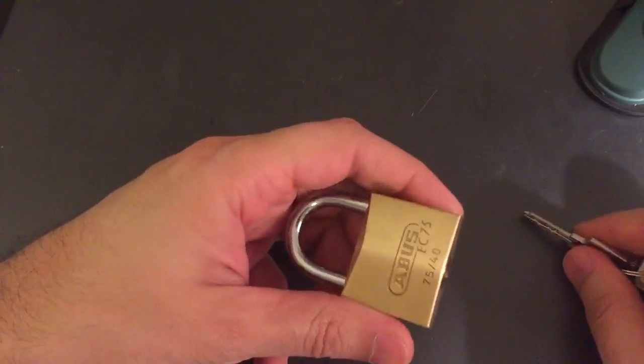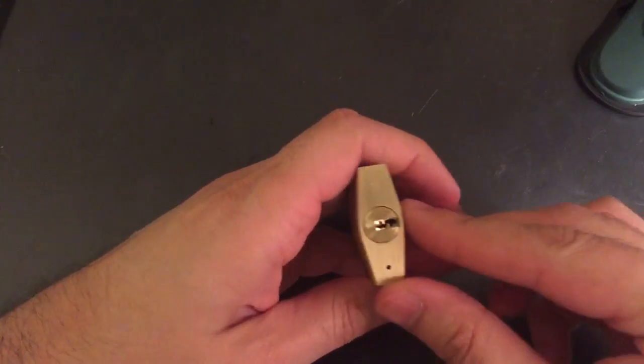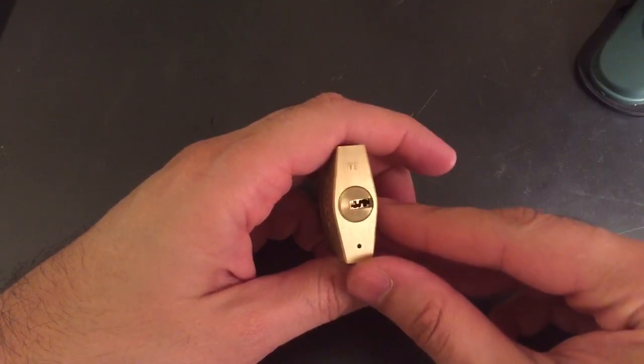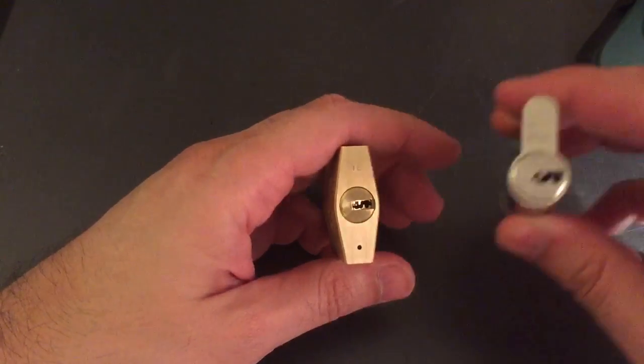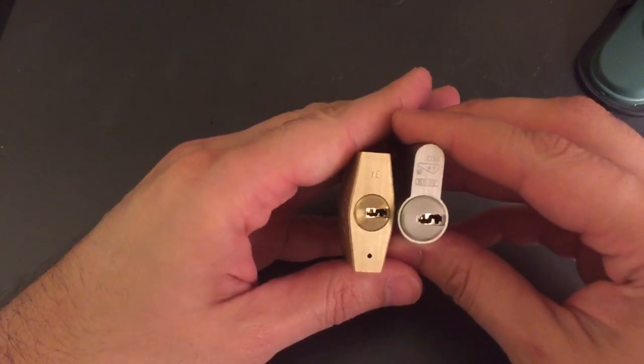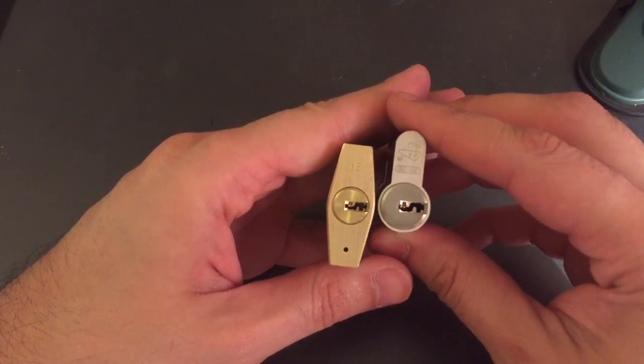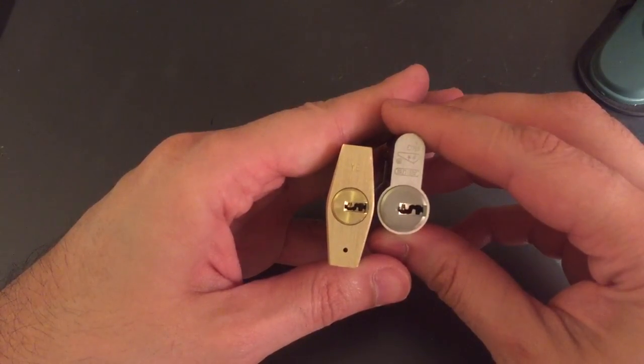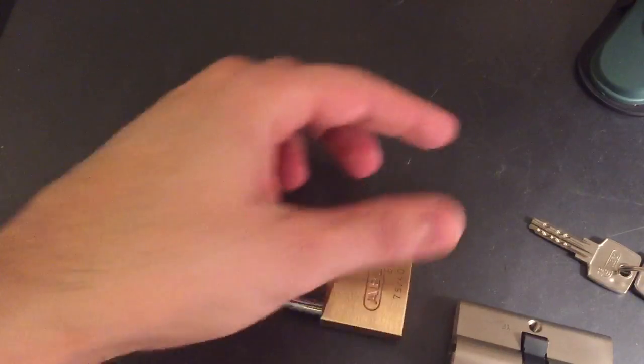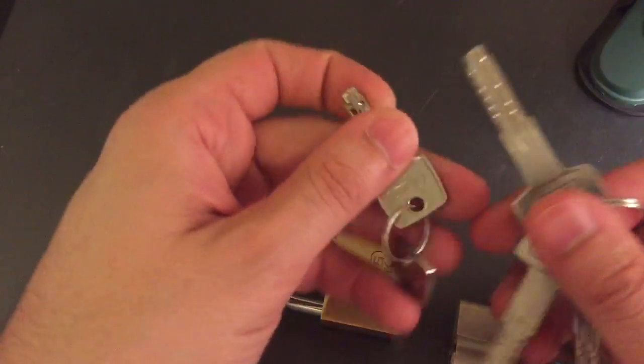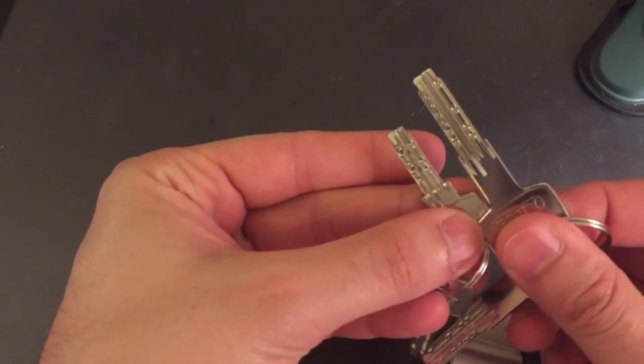It's a deceptively challenging little lock for a couple reasons. The first is a really tight keyway. Now if you compare this to the Abus D10 that I did a video on last week, you can see it's much smaller and it really brings home the point if you compare the keys next to each other. It's really a pretty tiny key.